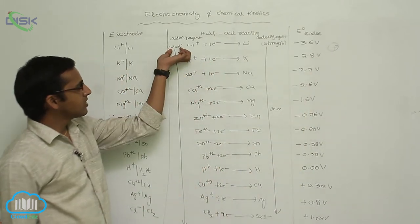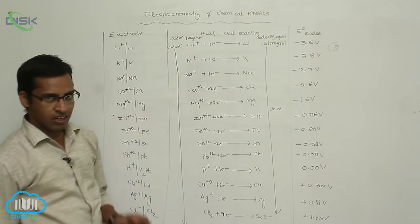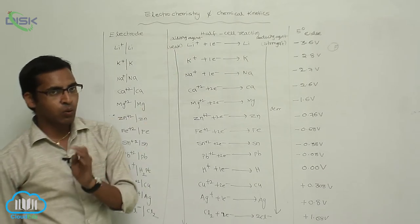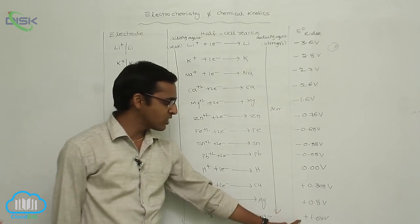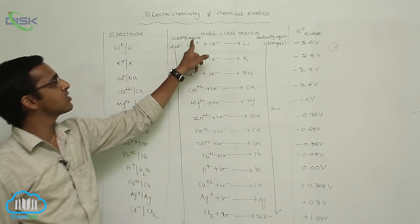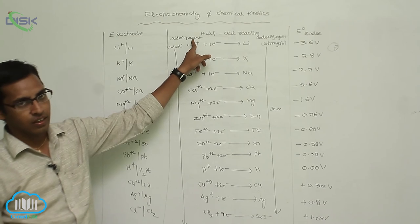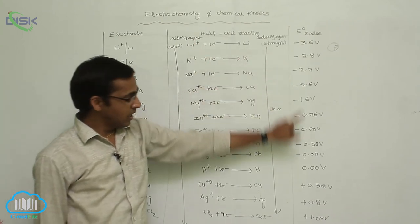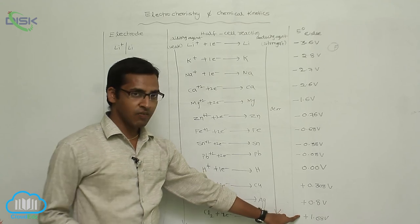In the series, reduction potential values are greater toward the bottom. The greater the reduction potential value, the greater is the oxidizing power of the agent. A weaker oxidizing agent corresponds to a lower reduction potential value.